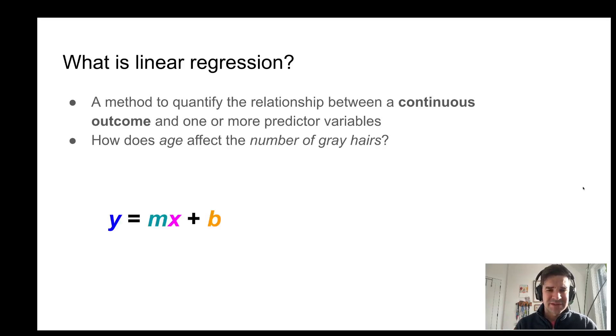And the basics of linear regression dates back to high school math, where we're trying to determine the slope of a line using the formula y equals mx plus b. So on the y-axis here, we have the number of gray hairs, x-axis is age, and then we can calculate the slope of the line, which is m,